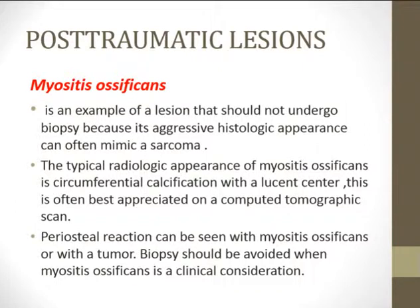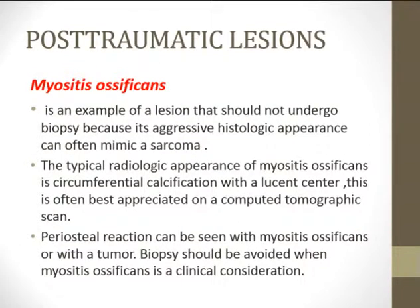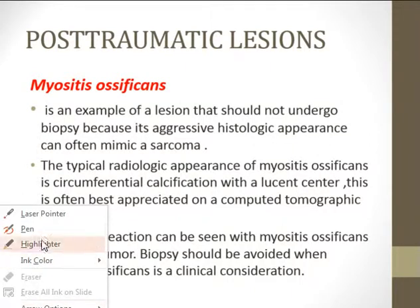Skeletal don't touch lesions are lesions that are so radiographically characteristic that a biopsy or additional diagnostic tests are not necessary. The diagnosis is obvious from the radiology — you don't need to do any other tests, biopsy, or surgery. These lesions can be categorized into three categories: post-traumatic lesions, normal variants, and lesions that are real but obviously benign.